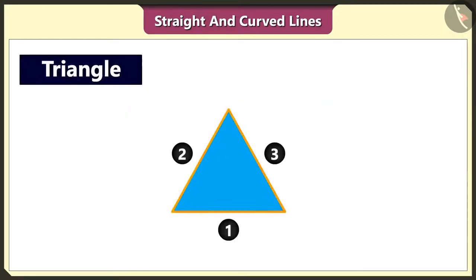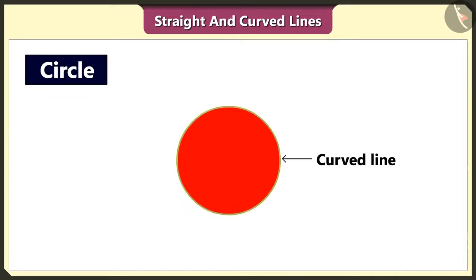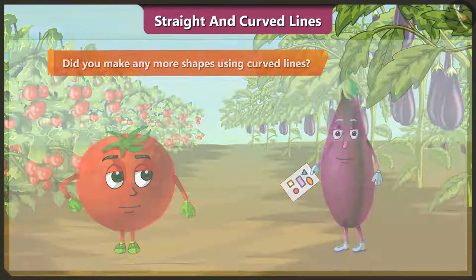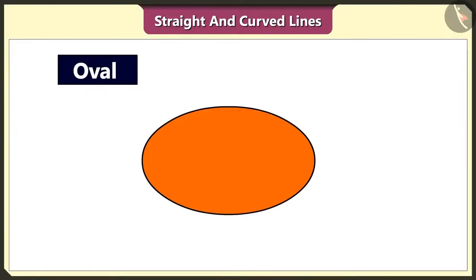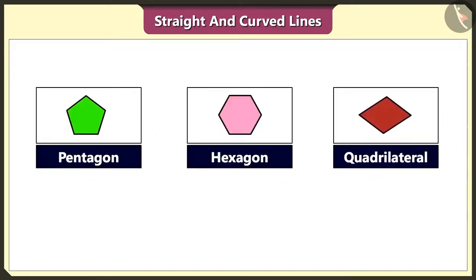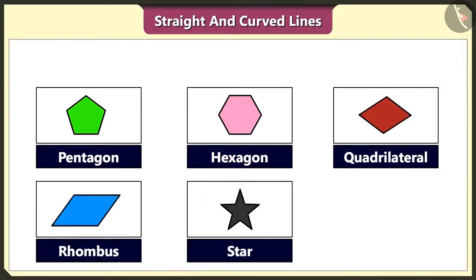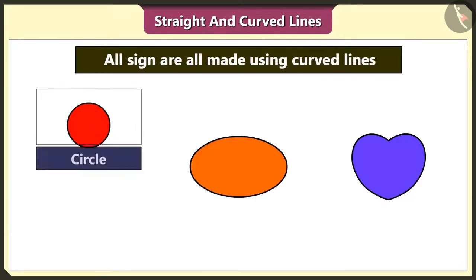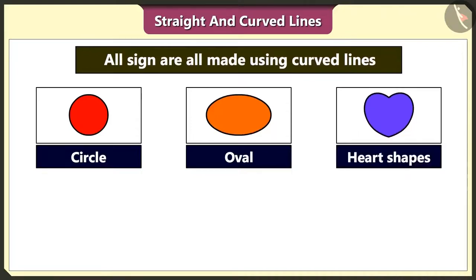Look, this triangle is also made using three straight lines. And this circle is made using a curved line. Did you make any more shapes using curved lines? I made this oval shape. This oval shape is also made using curved lines. Do you know that pentagon, hexagon, quadrilateral, rhombus, star and plus sign are all made using straight lines? We can make several shapes using straight lines, but we can make only a few shapes like circle, oval and heart shapes using curved lines.